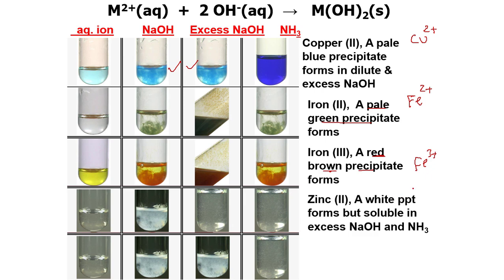Zinc 2+ (Zn2+) produces a white precipitate with dilute NaOH, but this precipitate is soluble in excess NaOH and in NH3. So with dilute NaOH: white precipitate; with excess NaOH and with ammonia: the precipitate dissolves to form a solution.